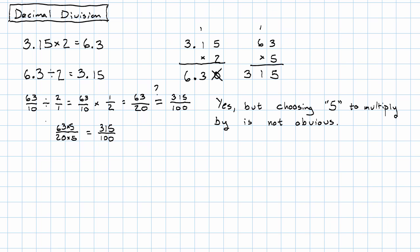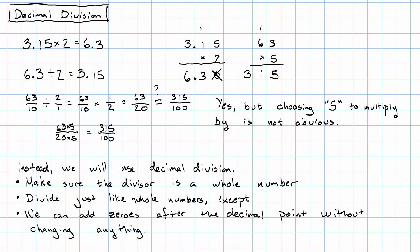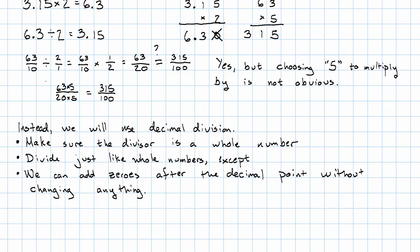Instead, we're going to use the procedure called decimal division. In decimal division, first we make sure the divisor is a whole number — make sure we're dividing by a whole number. And then we just divide exactly the same way we do with whole numbers, except we're allowed to add trailing zeros after the decimal point without changing anything. The decimal point in the answer goes right above the decimal point in the dividend.